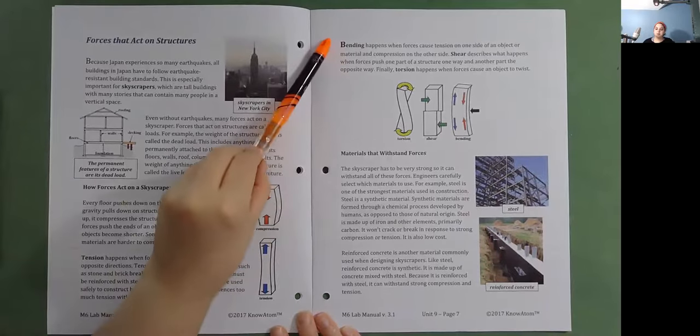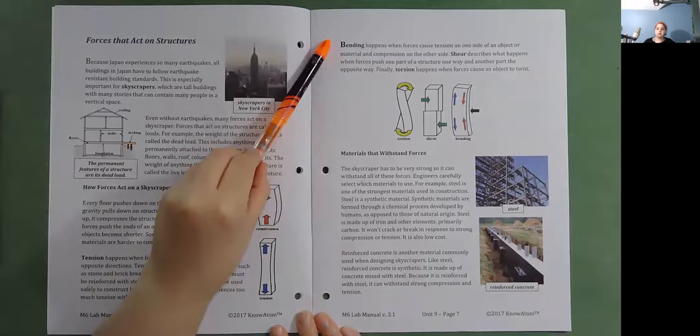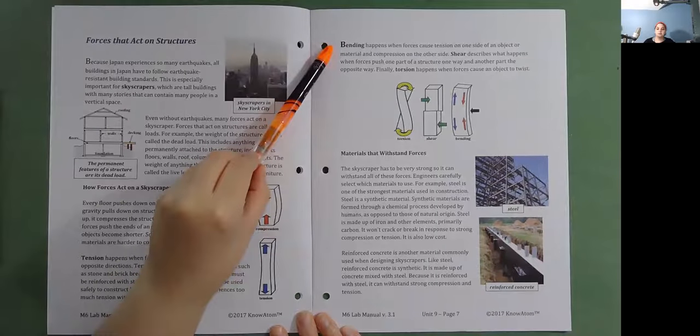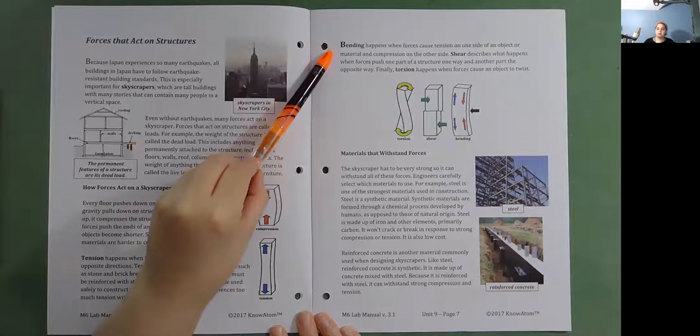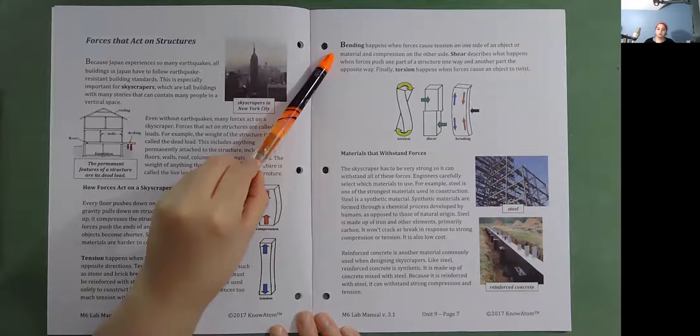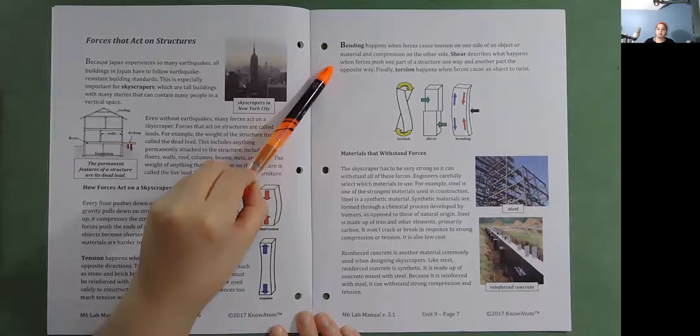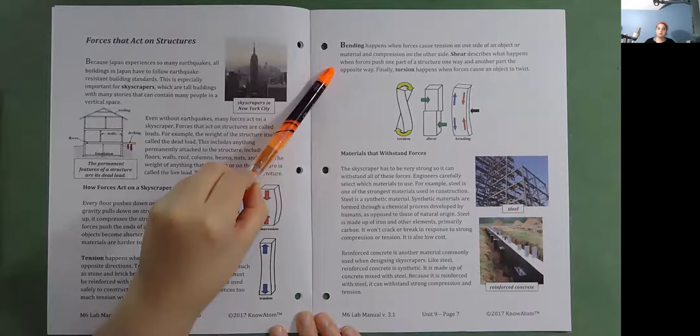Bending happens when forces cause tension on one side of an object or material and compression on the other side. Shear describes what happens when forces push one part of a structure one way and another part the opposite way. Finally, torsion happens when forces cause an object to twist.